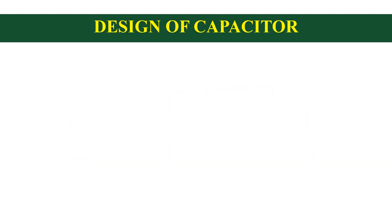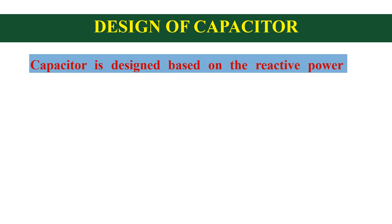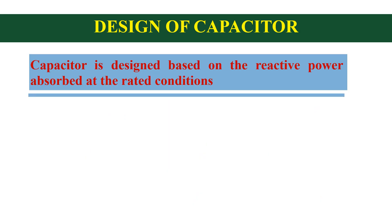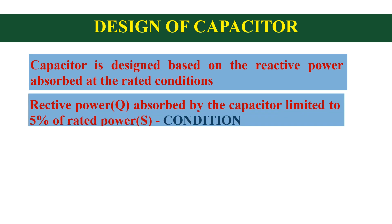Now we will look at the capacitor design. Capacitor is designed based on the amount of reactive power it absorbed. It can take reactive power from the source or the grid. As a thumb rule, reactive power absorbed by the capacitor is limited to 5% of the rated power.